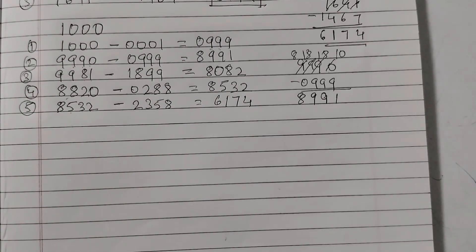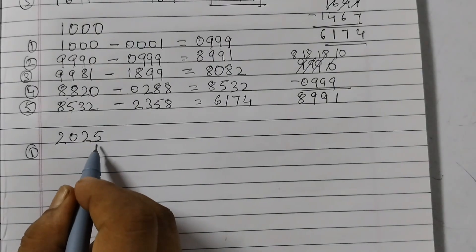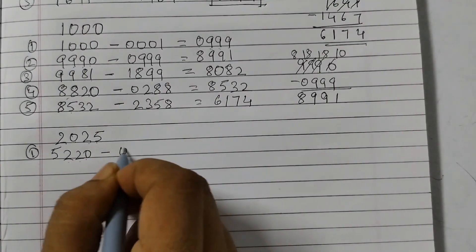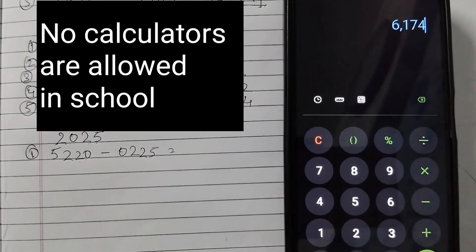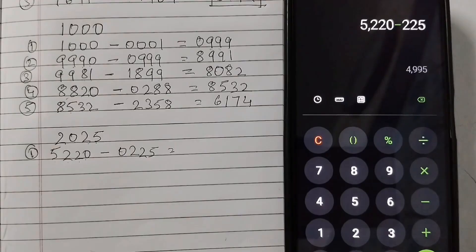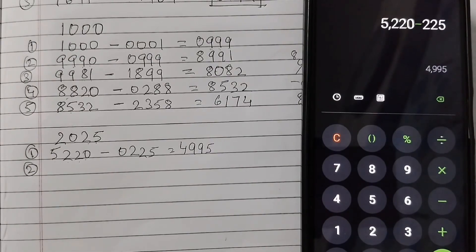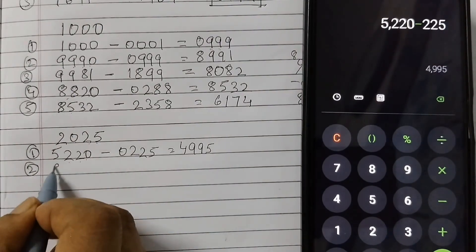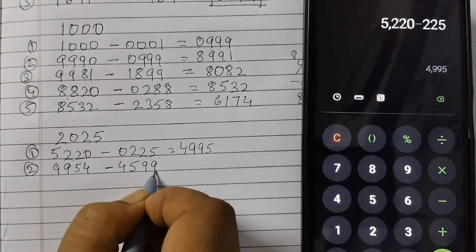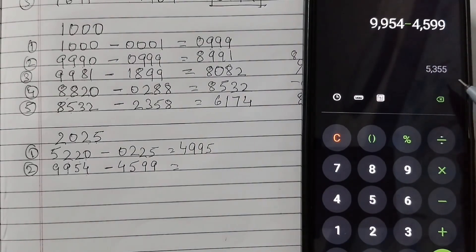Let us take one more example. Let us say we take this year which is 2025. So we will start with the largest number formed is 5220 minus 0225. I am going to use the calculator so that it becomes faster. 5220 minus 0225, that is 4995. In your school calculator is not allowed so you need to actually do the subtraction. Now using this number we will form the largest number which is 9954, smallest number is 4599. 9954 minus 4599, that is 5355.